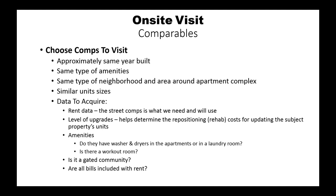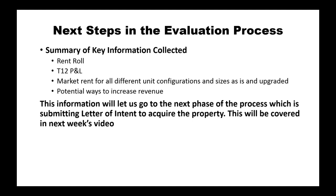At this point you should have all the key information needed. Here are questions to ask yourself: Did you get the rent roll showing all current leases? Did you get the trailing 12 months of income and expenses? Did you get market rents from visiting other properties, including all unit configurations, sizes, and whether they are rehabbed? And did you come out with an idea of how to increase potential revenues — whether by raising rents, rehabbing units, or other means? This information will move us to the next phase: submitting a letter of intent, or LOI, to acquire the property, which will be covered next week by David Teo.